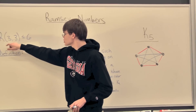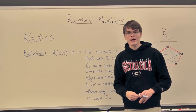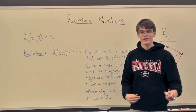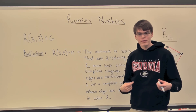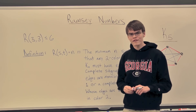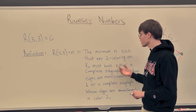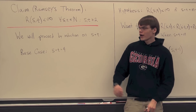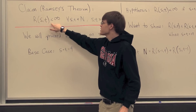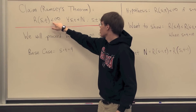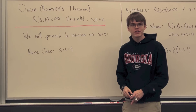We've actually shown that R(3,3) is in fact equal to 6. At this point we've established the existence of a single Ramsey number, R(3,3). In general, for R(s,t), how do we know that R(s,t) actually produces a finite result? How do we know there will actually be a minimum number of vertices such that this property holds? We make the claim — known as Ramsey's theorem — that R(s,t) is finite for all s and t in the natural numbers, provided that s and t are greater than or equal to 2.